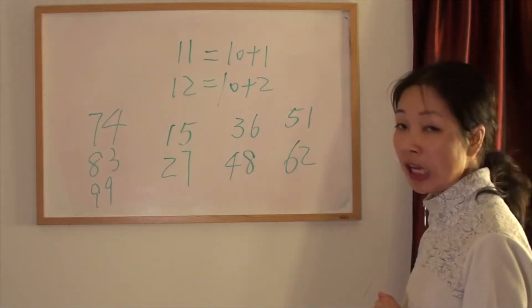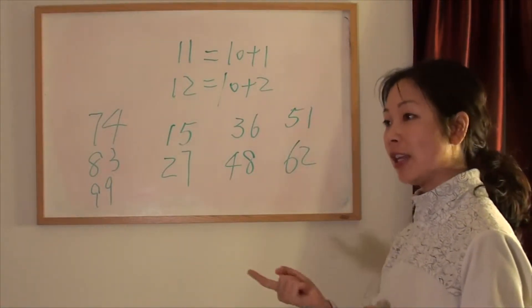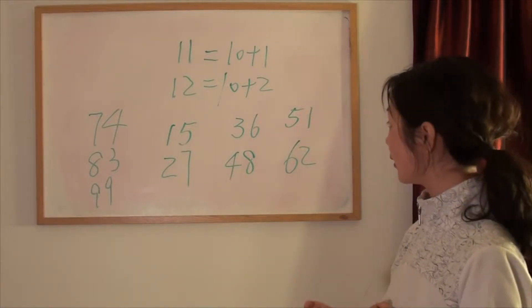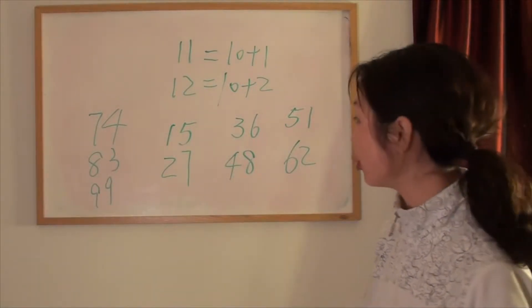Okay, 11 is 十一, 12 is 十二, how to say 13? 十三, 14, 十四, 15, 十五, good.